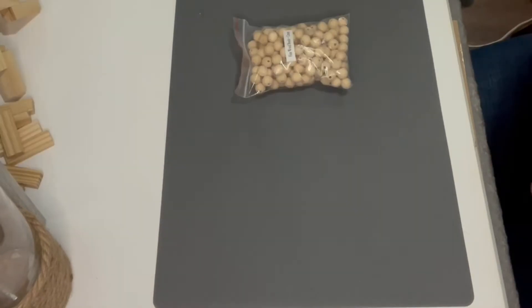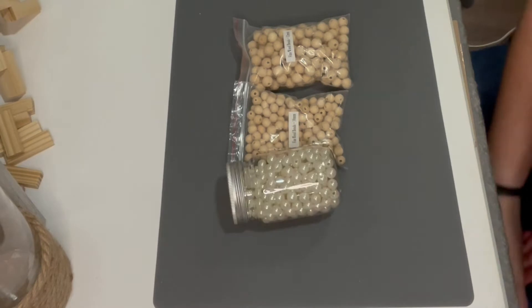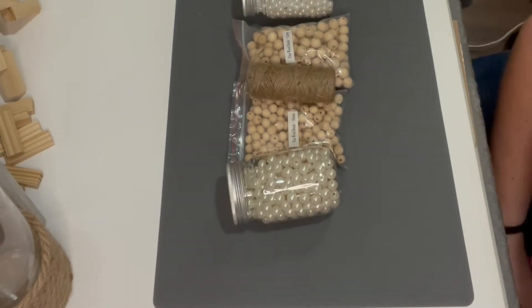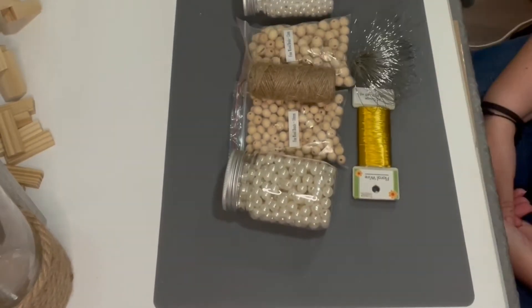For materials we'll need some building blocks, either Jenga or the ones from the dollar tree, some wooden beads and pearls. You can use any kind of beading of your choice. Then we'll need some jute rope, some golden wire and some silver wire.